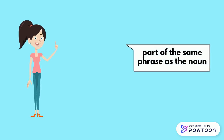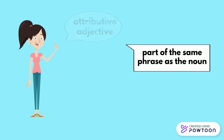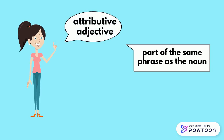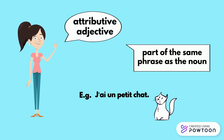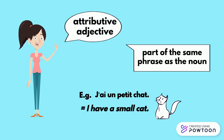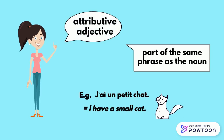When it is part of the same phrase as the noun, the adjective is called attributive. For instance, j'ai un petit chat — I have a small cat.